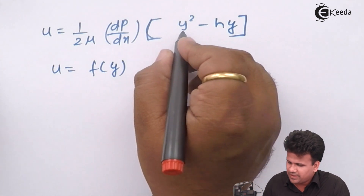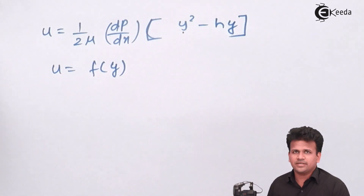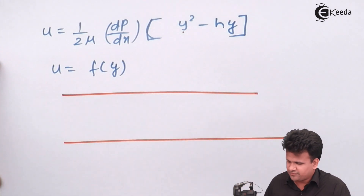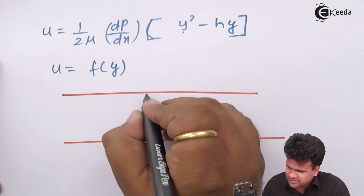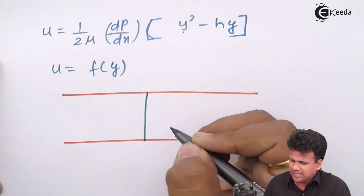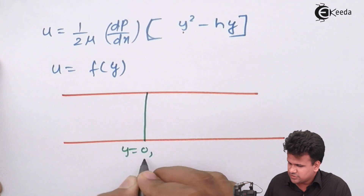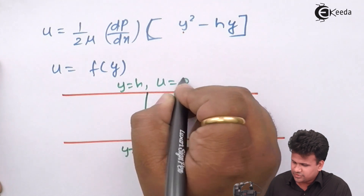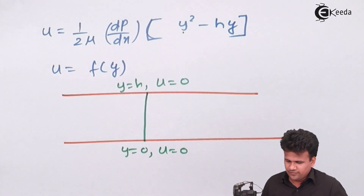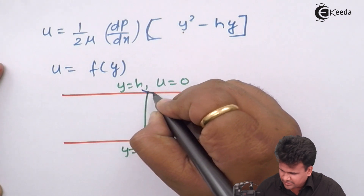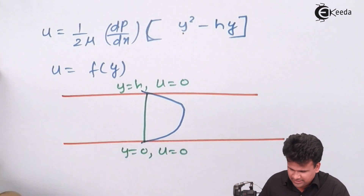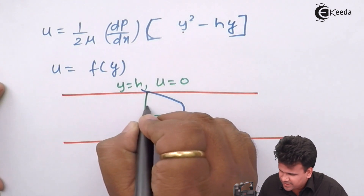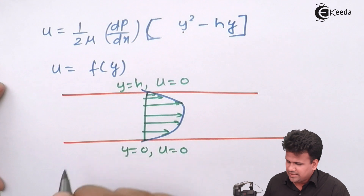The curve traced is a second degree parabolic curve. The top surface and bottom surface are at rest since they are in contact with the solid surface — at y = 0, u = 0, and at y = h, u = 0. The velocity increases from the bottom, reaches a maximum at the center, and gradually decreases toward the top surface.